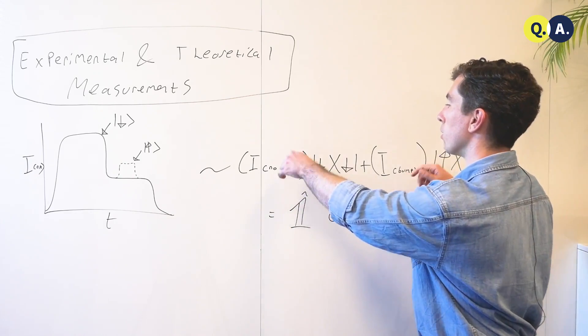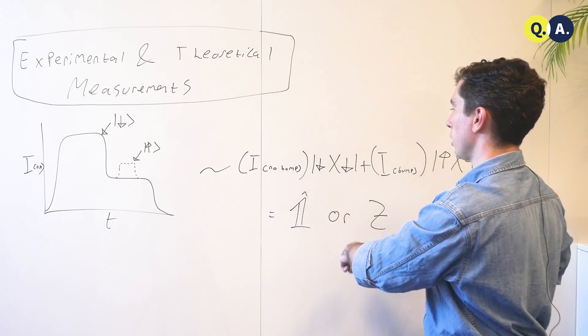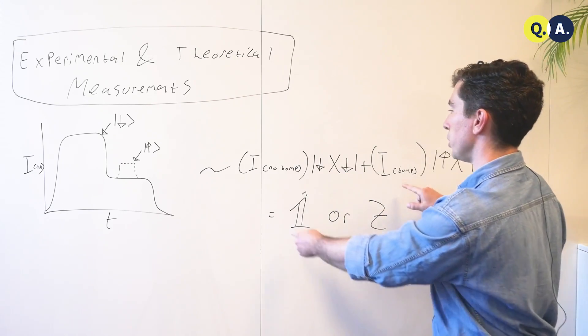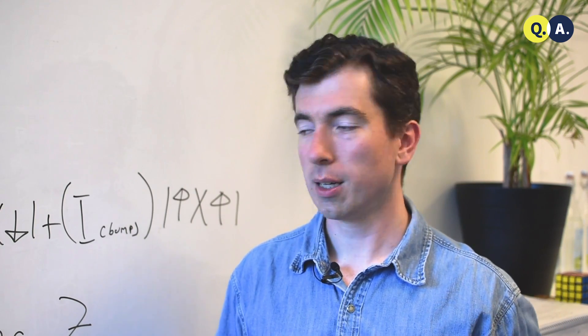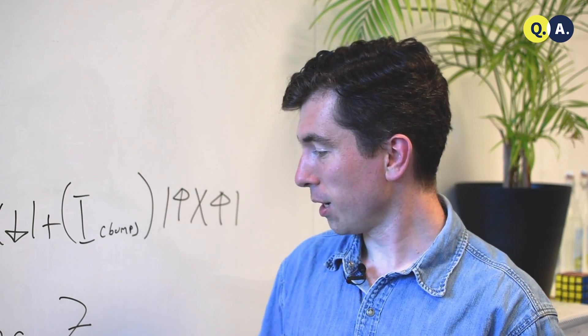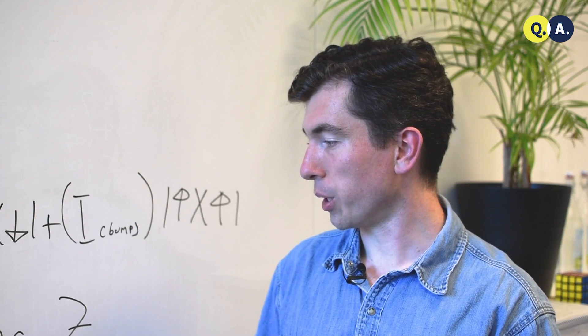But if these numbers are discernibly different, then down down and up up receive different measurement outcomes, and our measurement operator is more like a z, which is one that we can use to accurately distinguish between the computational basis states in quantum computing.